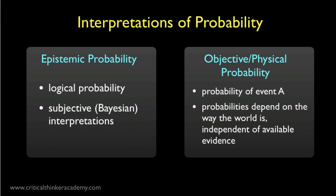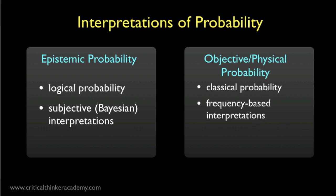Or think about radioactive decay, where there's, say, a 50% chance that a particular atom of some element will decay in the next hour. The half-life of a radioactive element is an objective feature of the world that we discover. It's not something that depends on the evidence or beliefs that we have about it. Of the probability concepts we've looked at, classical probability and frequency interpretations of probability belong more to this camp.